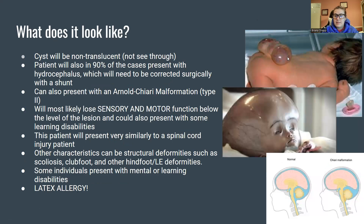The cyst is non-translucent. Sometimes they'll hold a flashlight up to the cyst — if they can see through it, it's meningocele; if they can't, it's myelomeningocele because the spinal cord blocks the light. In 90% of cases, the patient will also have hydrocephalus, due to excess cerebrospinal fluid accumulating in the head. This can be corrected surgically by placing a shunt, so patients may have a past medical history of shunt placement to address hydrocephalus.